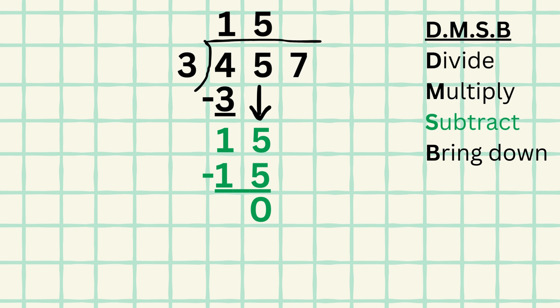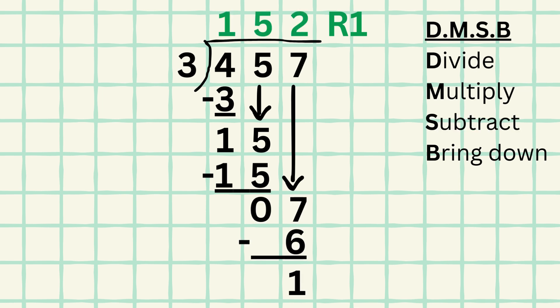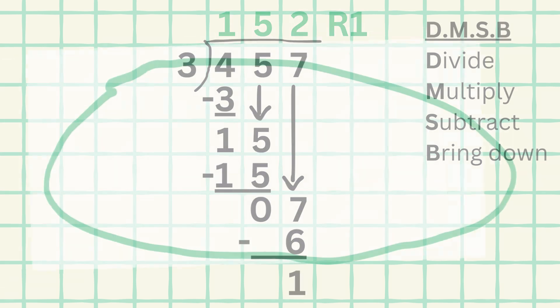Then we must bring down the last digit, which is 7. And 3 goes into 7 two times, which of course leaves us with 6 when we multiply. Then we simply subtract 6 from 7, leaving us with a remainder of 1 and a response of 152 with a remainder of 1.